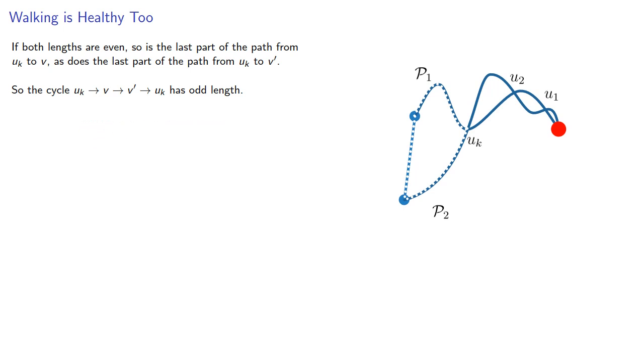Alternatively, if both of these lengths are odd, so is the last part of the path, because remember the total distance was even, and once again, the cycle u to v to v prime to uk has odd length.